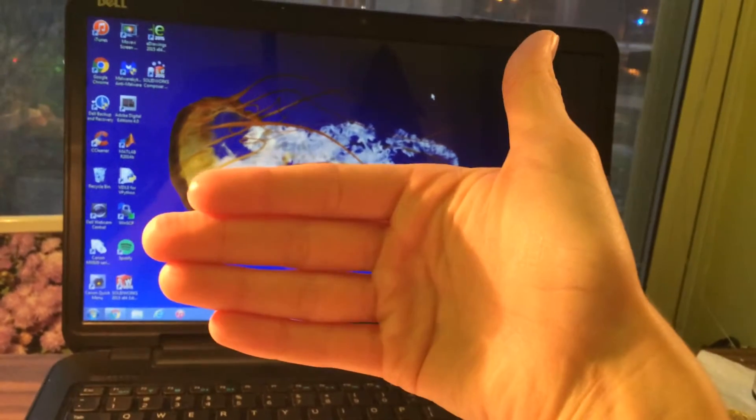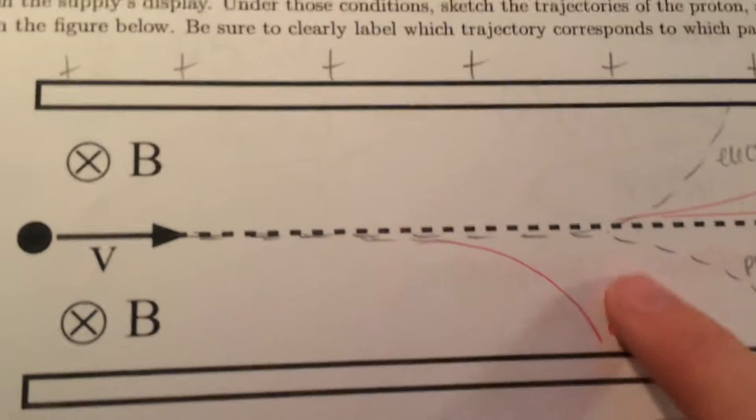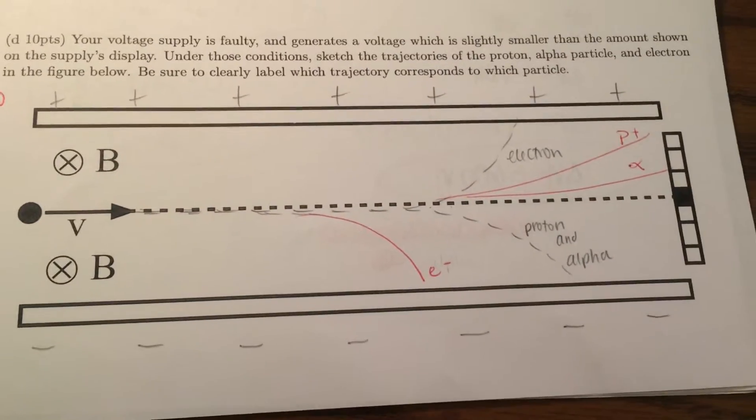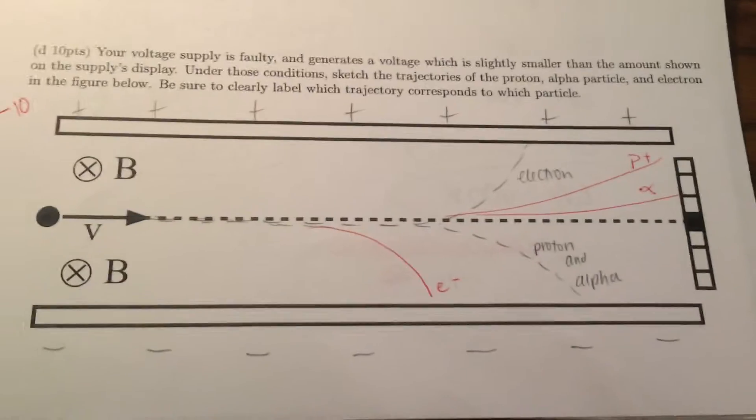So you say velocity points to the left, magnetic field is still into the page, so magnetic force is down. So it should move down towards the negative plate. But, just a small error there, and everything else is good.